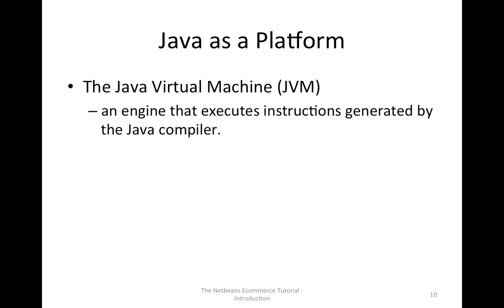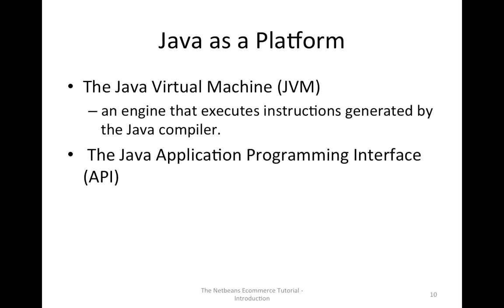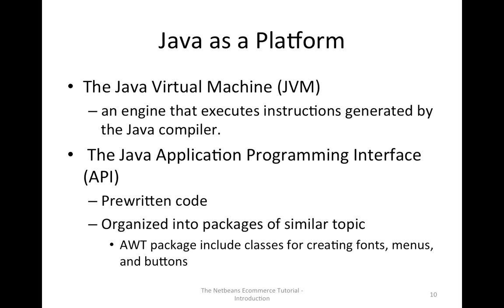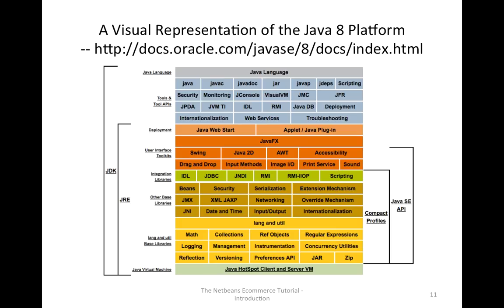Java as a platform includes the Java Virtual Machine, which is an engine that executes instructions generated by the Java compiler, and the Java Application Programming Interface — API — which is a collection of pre-written classes organized into packages of related topics. For example, the AWT package includes classes for creating fonts, menus, and buttons. Here is a visual representation of the Java 8 platform, which you can find on the website. On the website, this picture is interactive — if you click any topic, a new window will open to show you the documentation about that subject.